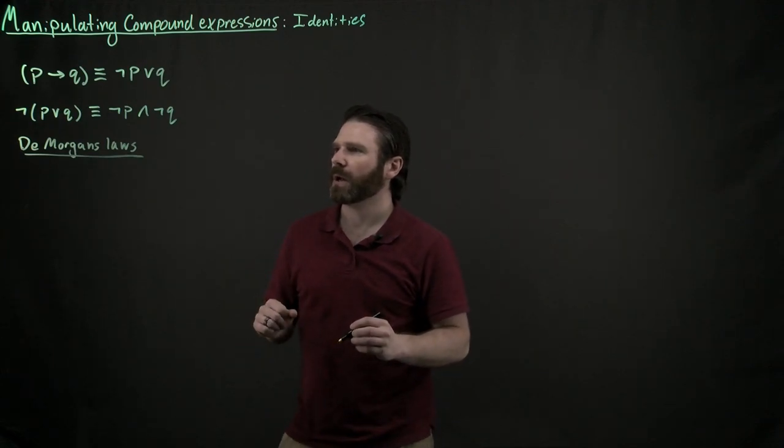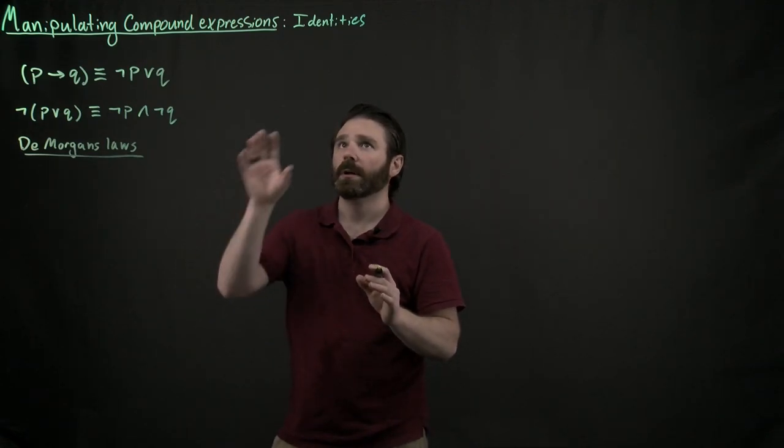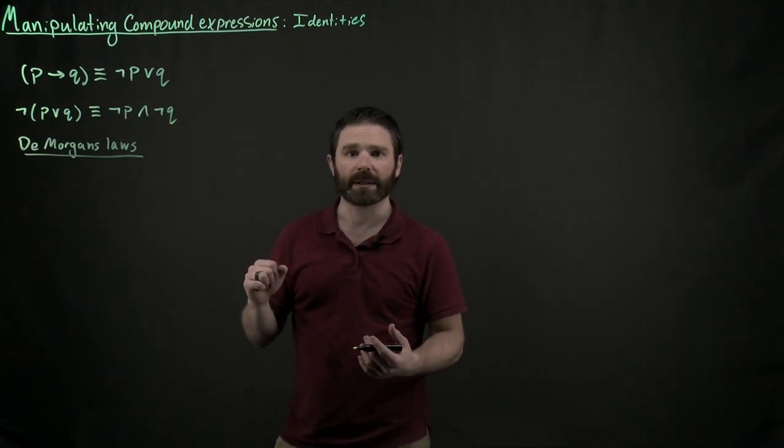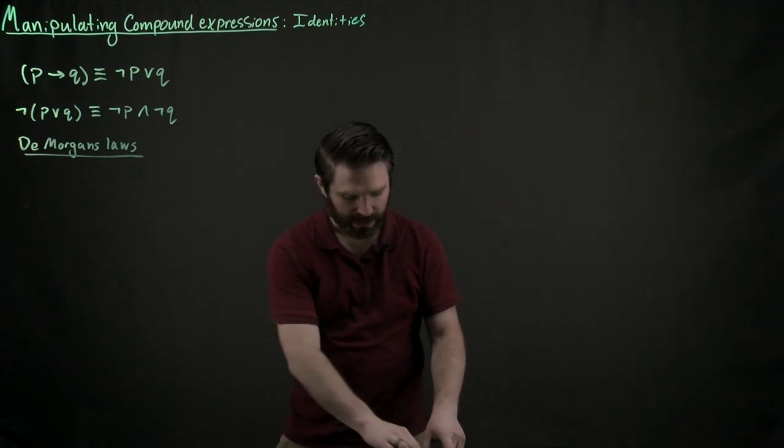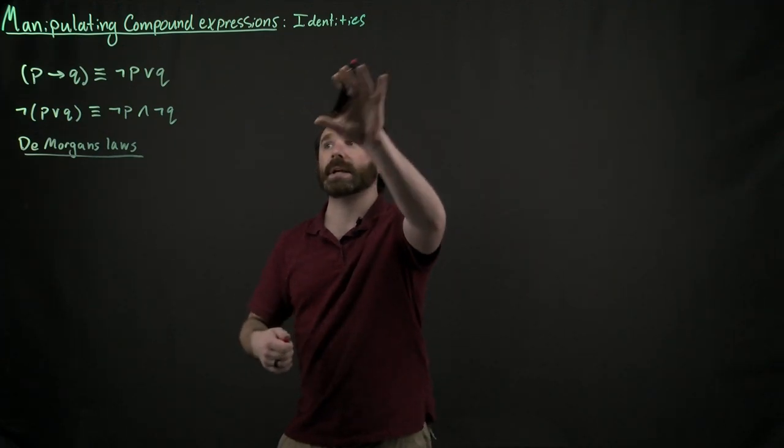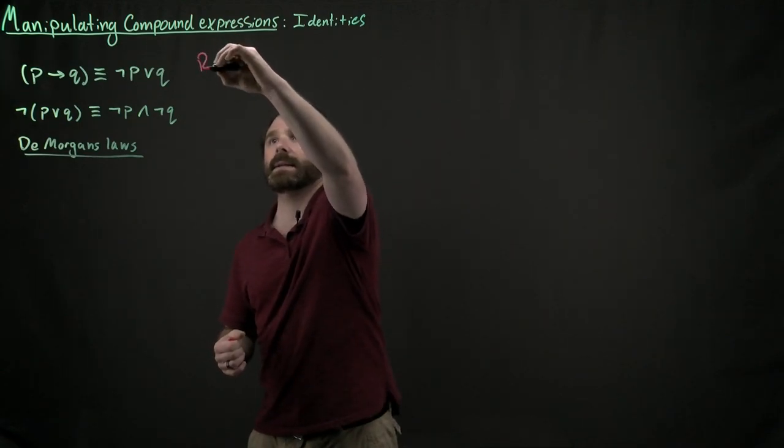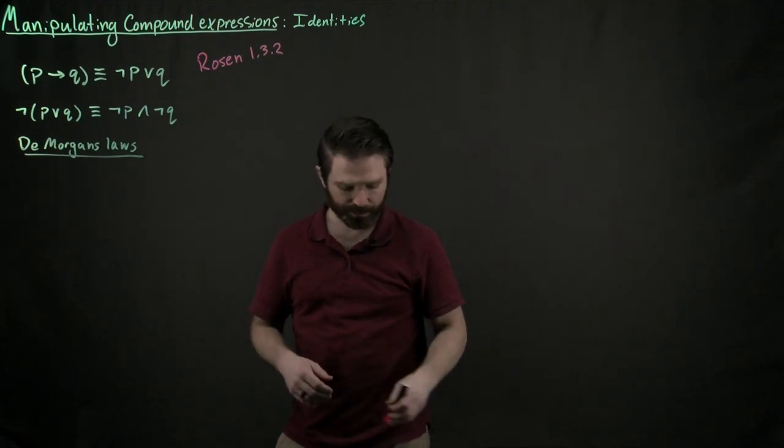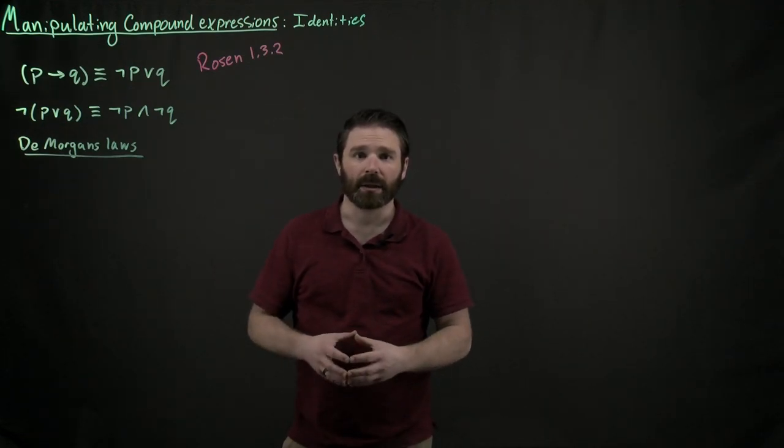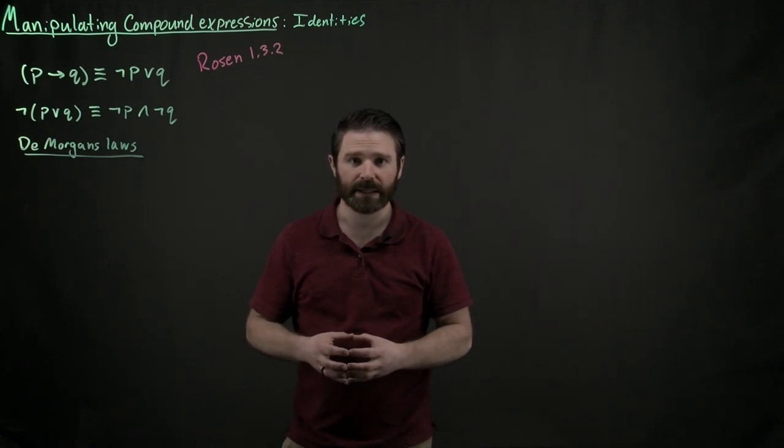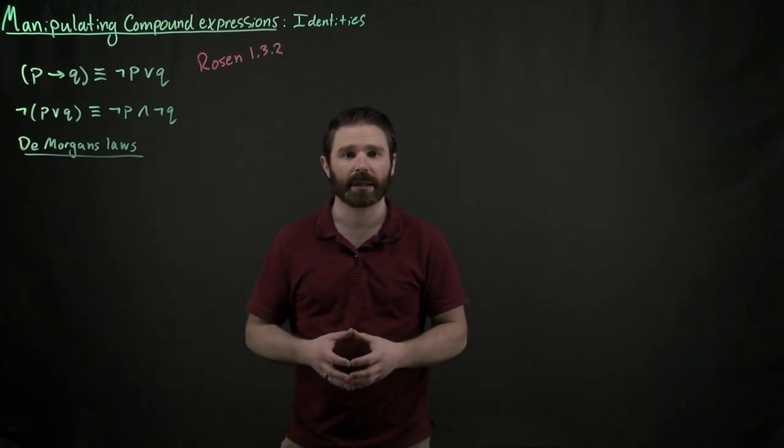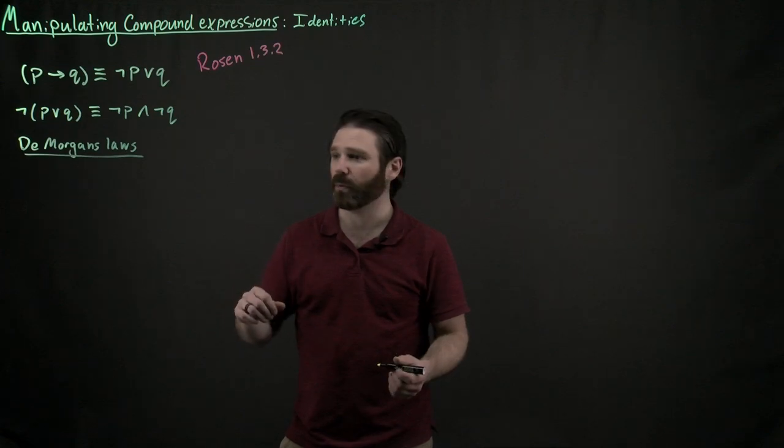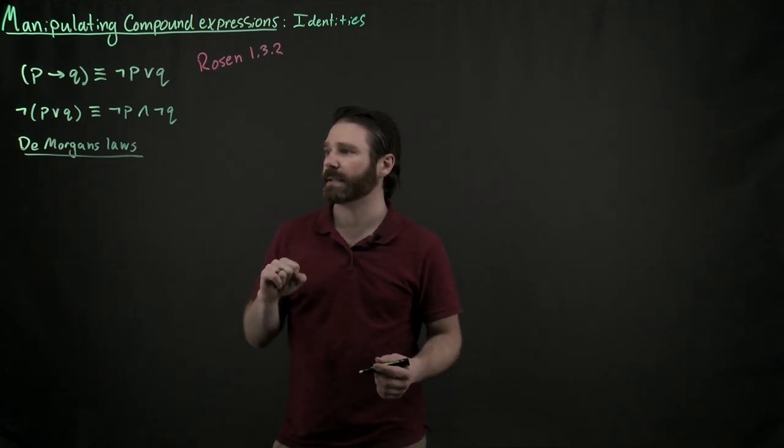DeMorgan's Laws are a set of identities that show you how this not operator right here interacts with ands and ors. So this section and all this section right here about identities is contained in 1.3.2. This section contains lots of identities, actually dozens and dozens of different identities. I'm not going to go through them all. I basically want to draw your attention to a few important ones. So DeMorgan's Laws is one of the most useful ones and I already said that this is an example of it.